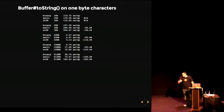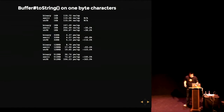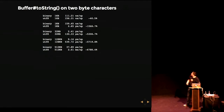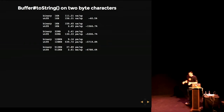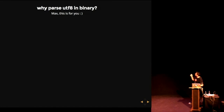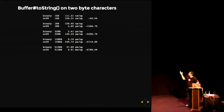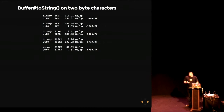It gets even worse if your strings enter into full two- and three-byte character UTF-8 space, beyond just the Latin-1 set. Decoding full UTF-8 strings with UTF-8 is insanely slow. So why parse UTF-8 in binary? You might wonder why I show you this — if it's UTF-8, you might think you have no option but to parse it as UTF-8. But you do have options in some cases.